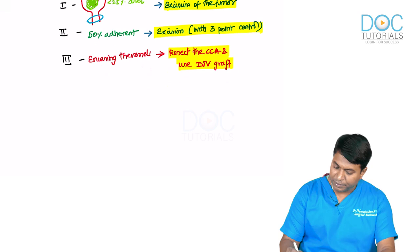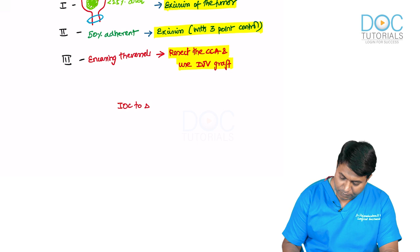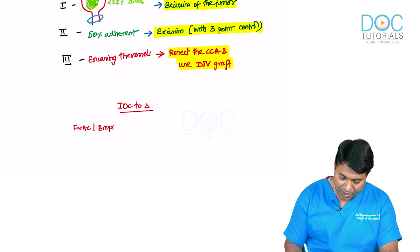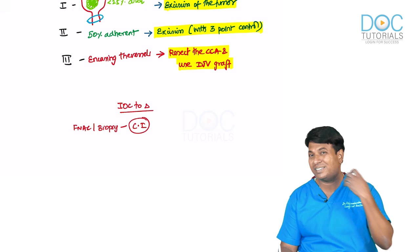So the Shamblin classification guides management: excision if less than 25% adherent; excision with three-point control if 50% adherent; resect the common carotid artery and use IJV graft if there is encasement. This is very important for your exams.